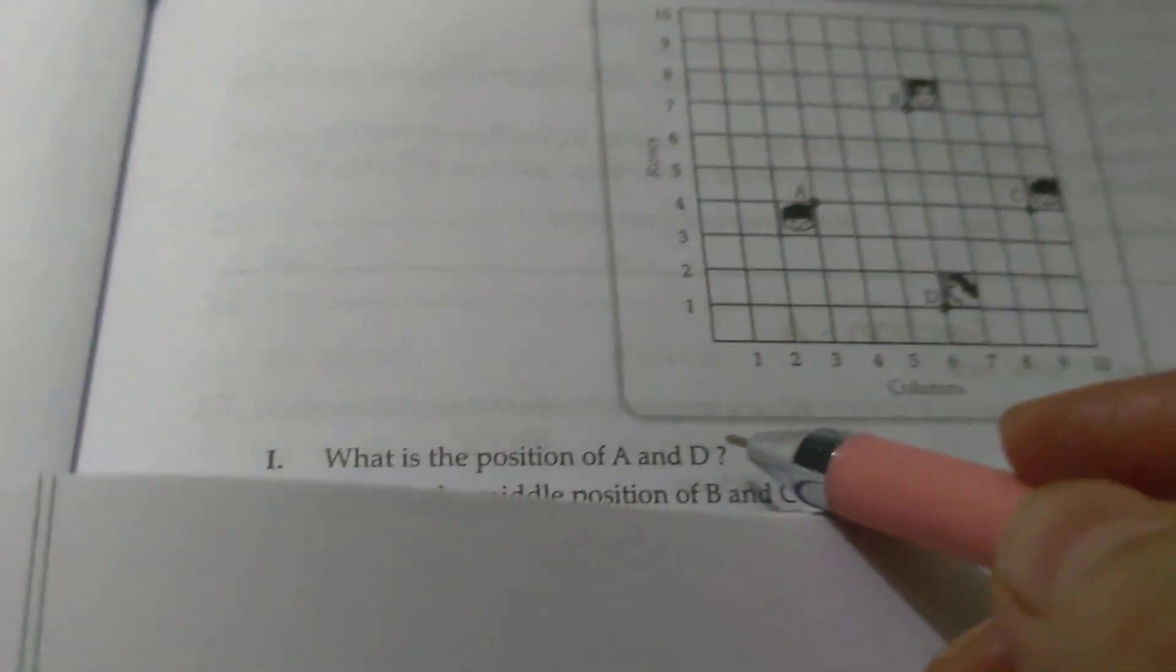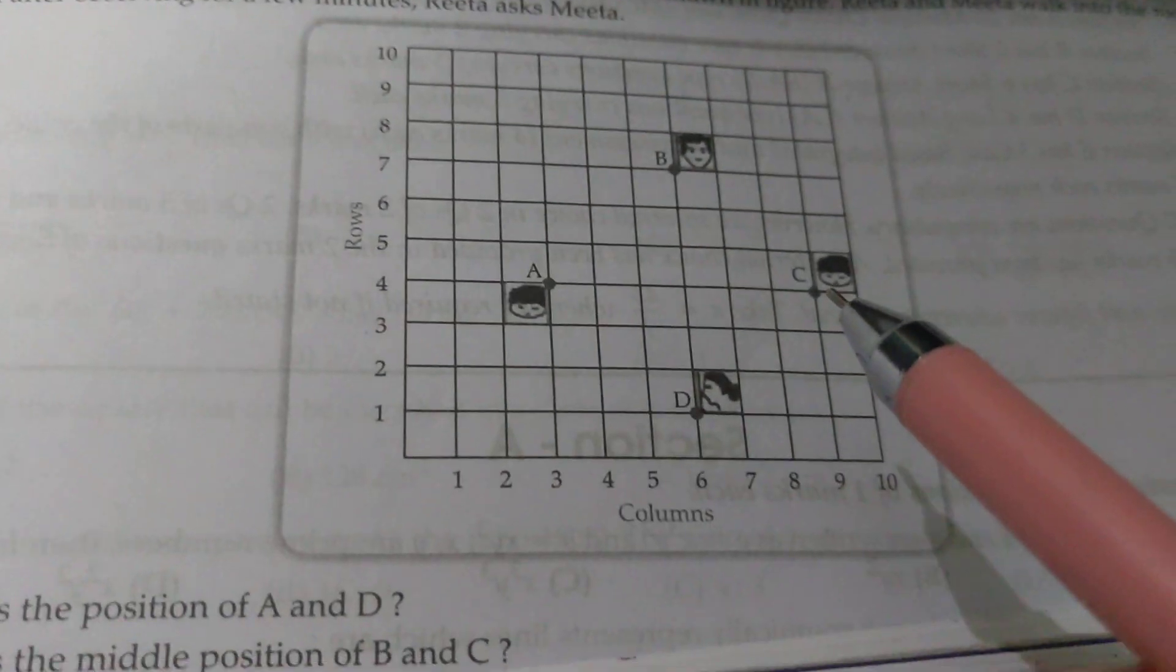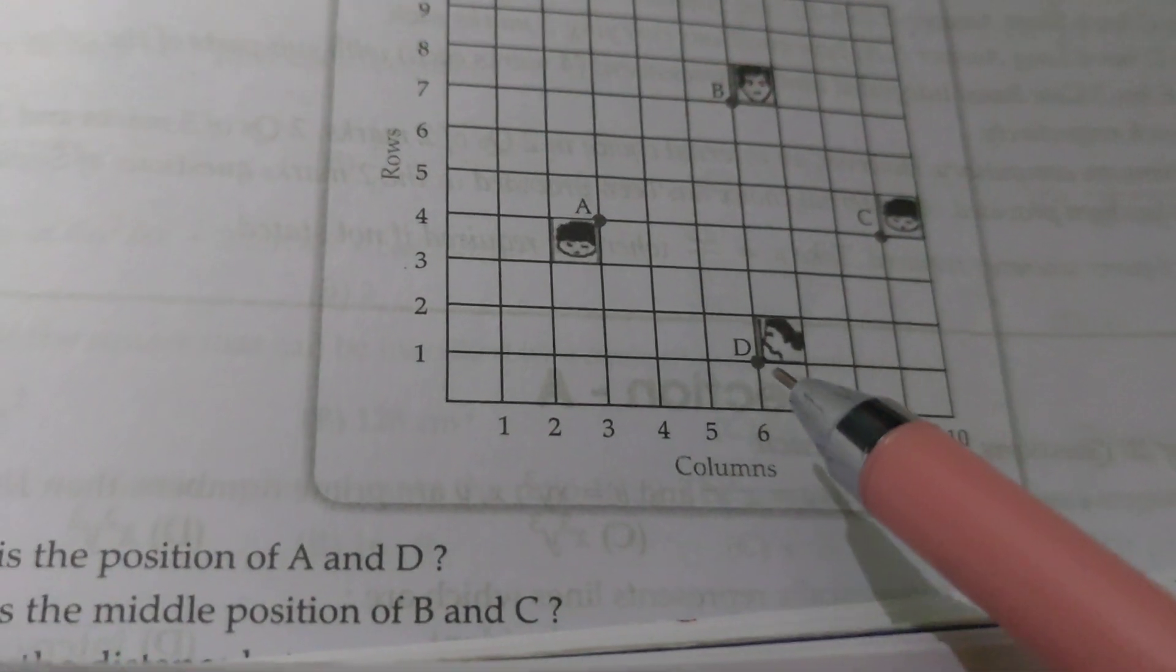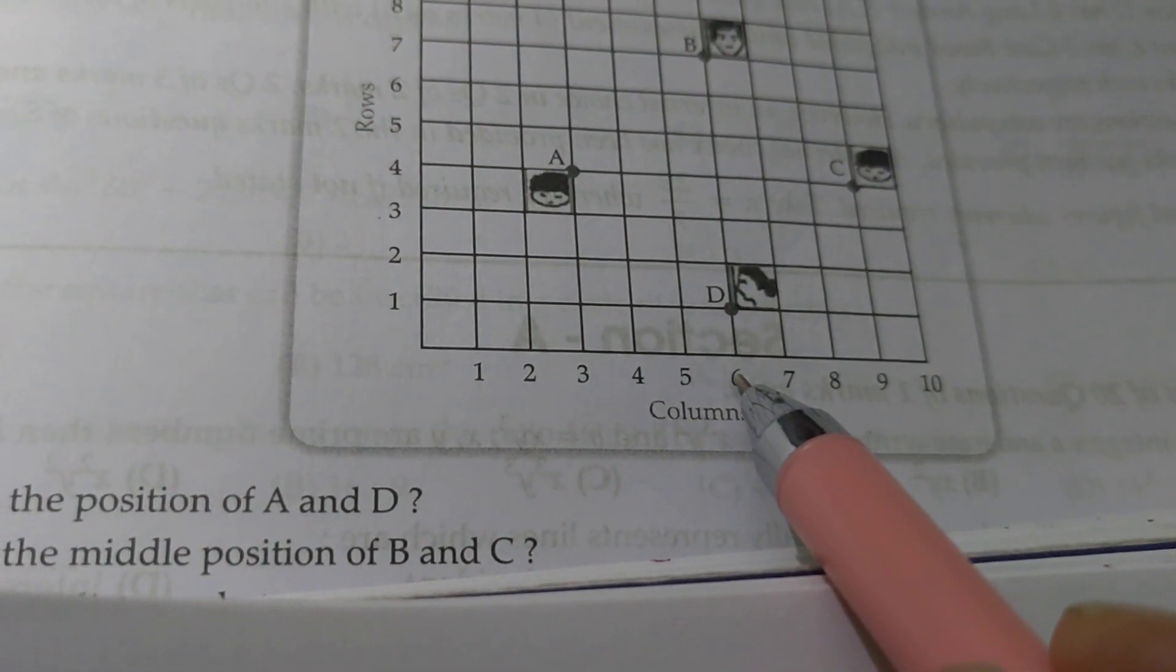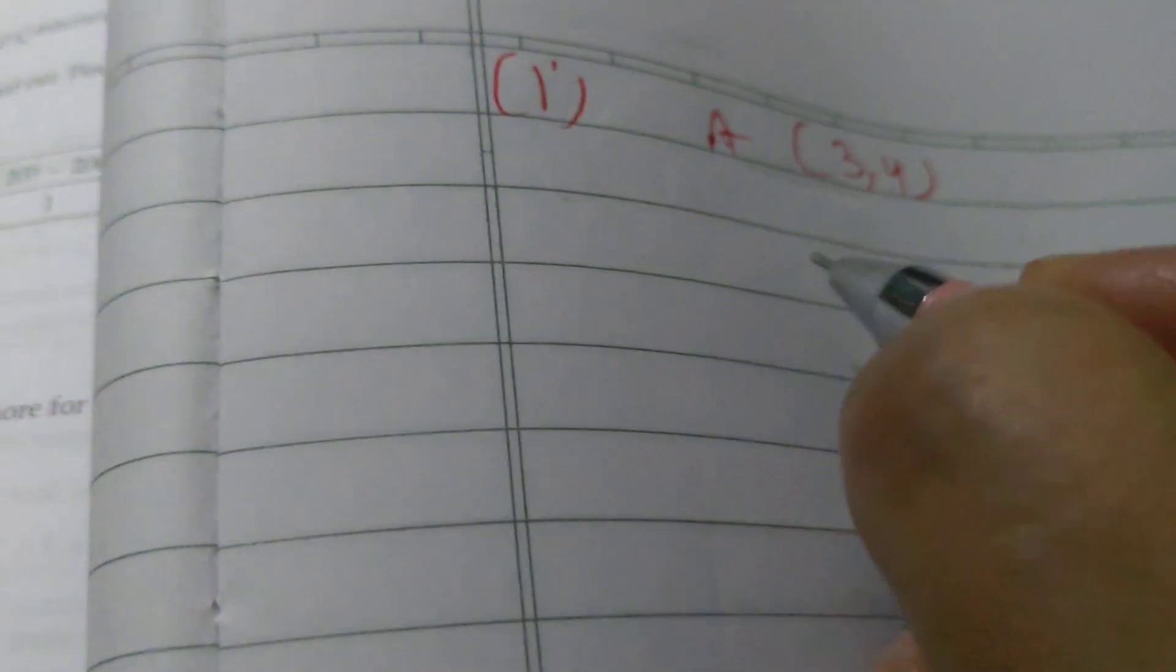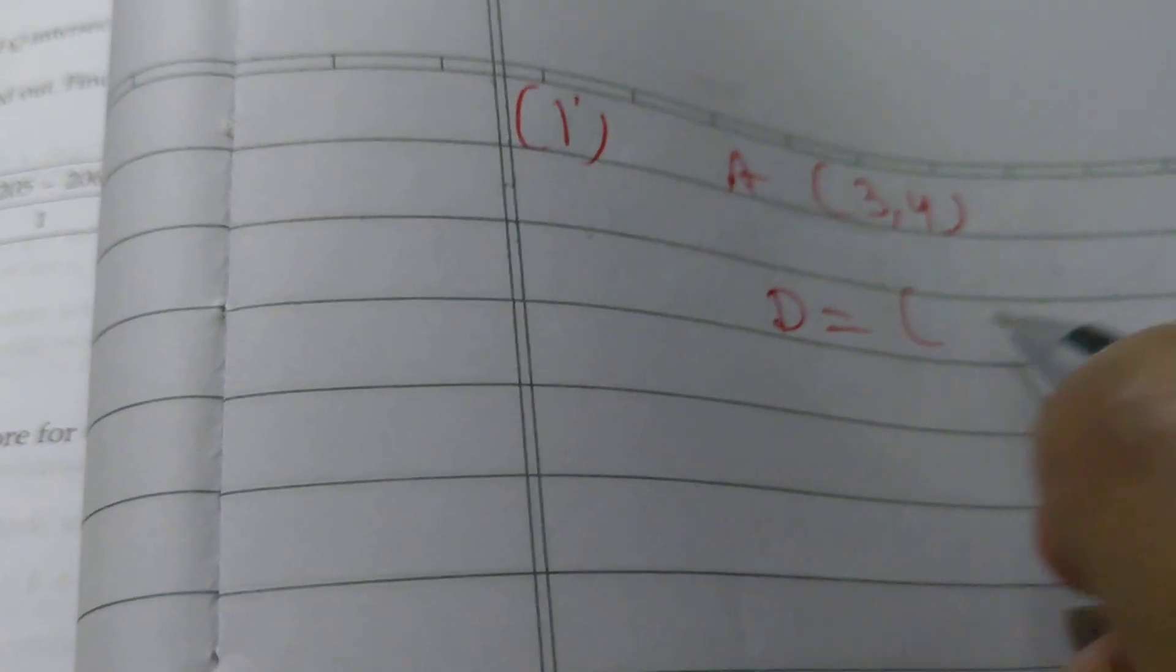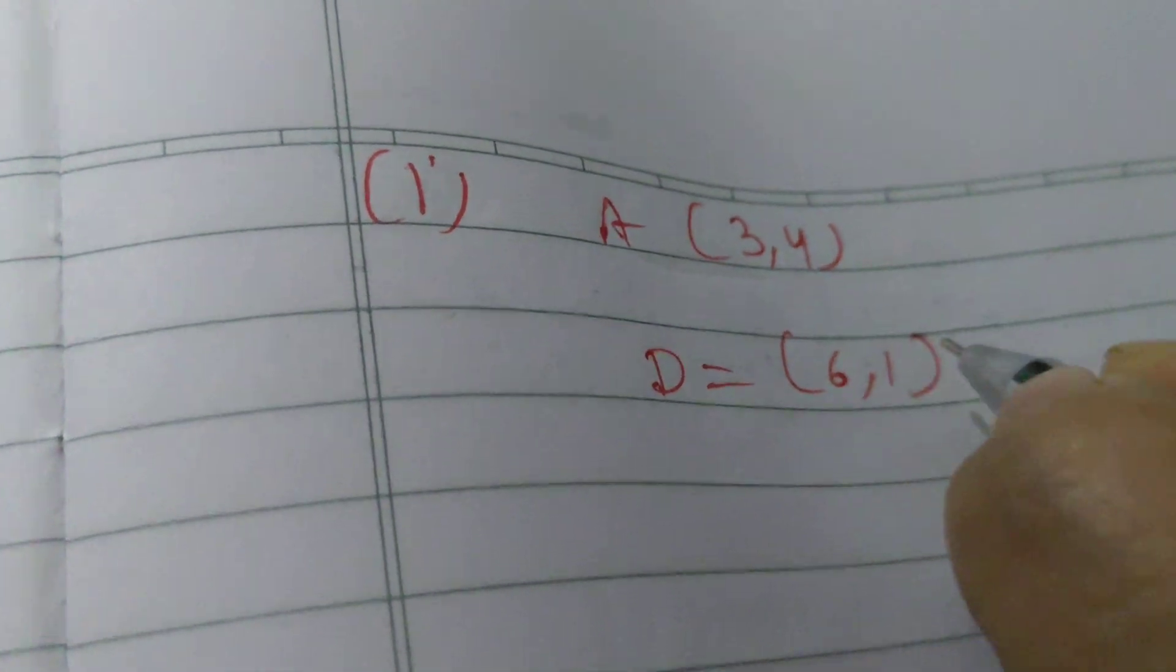Ab dusra, usne poocha hai D ki position. D dekho, isme figure mein D kahan pe rakha hai, aapka D ye hai. To pehla wala to humara x, ye to 6 pe hai. Aur y kya ho gaya? Ye wala 1. To humari D ki position kya ho gayi? 6 and 1.